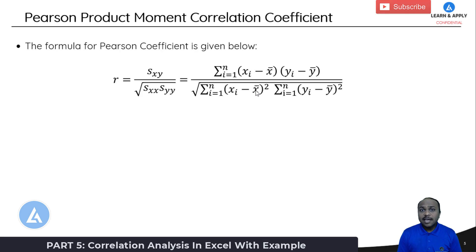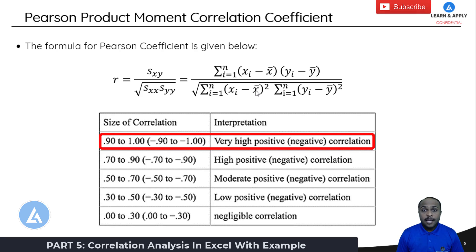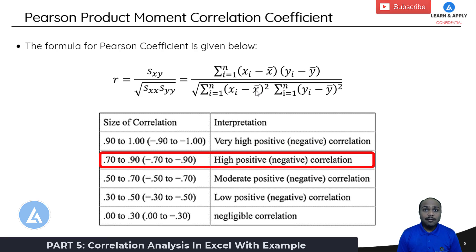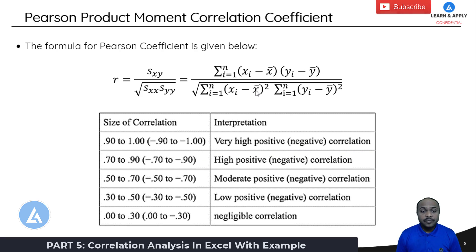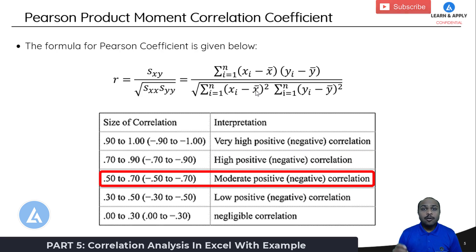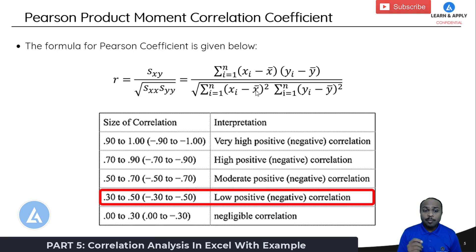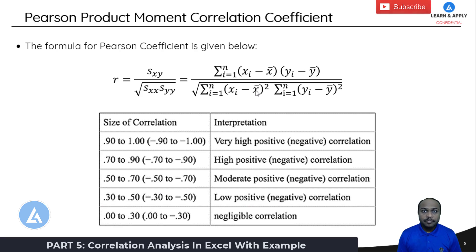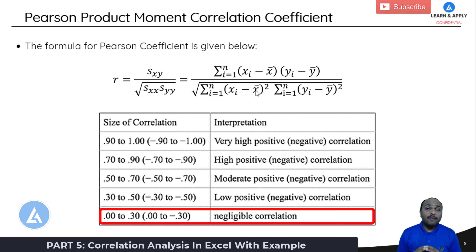But how can we say how much strength of correlation exists between them? For that we need to look at the value of R. If the value of R is between 0.9 and 1, there is a very high correlation. If it is between 0.7 and 0.9, high correlation. If between 0.5 and 0.7, moderate correlation. If between 0.3 and 0.5, low correlation. If R is less than 0.3, the correlation exists by chance — in other words, there is negligible correlation.